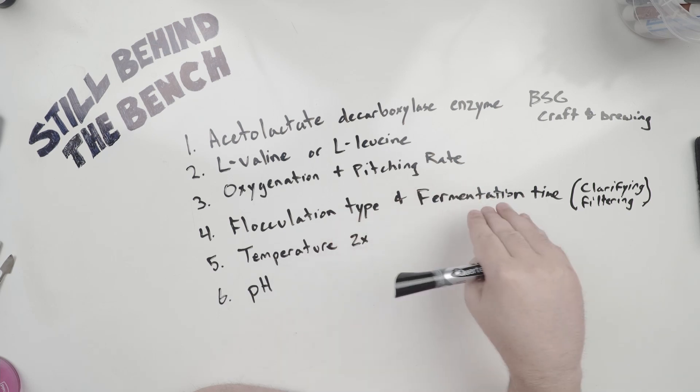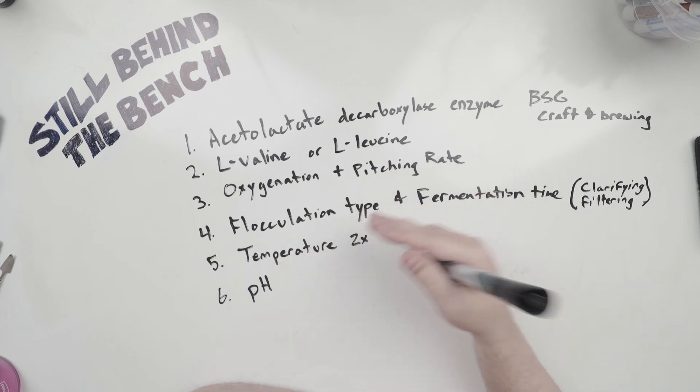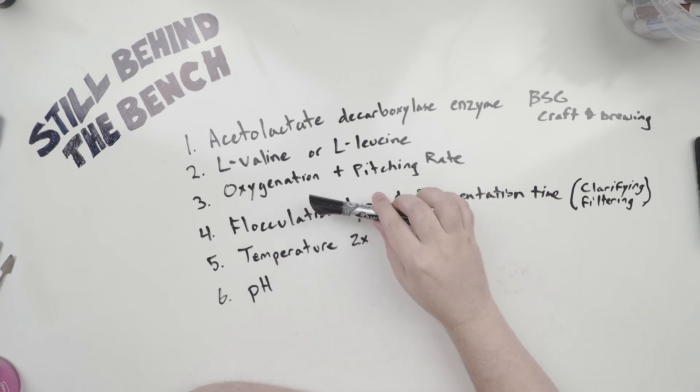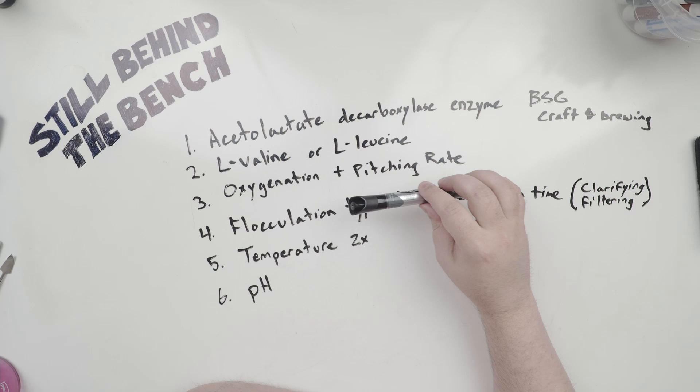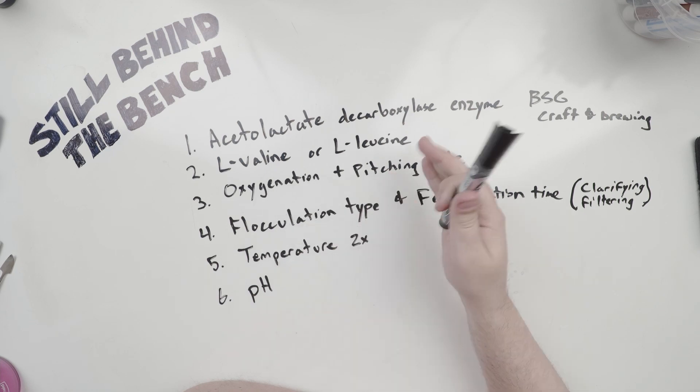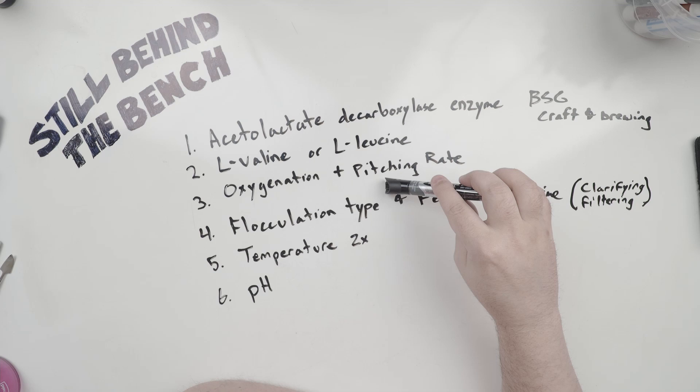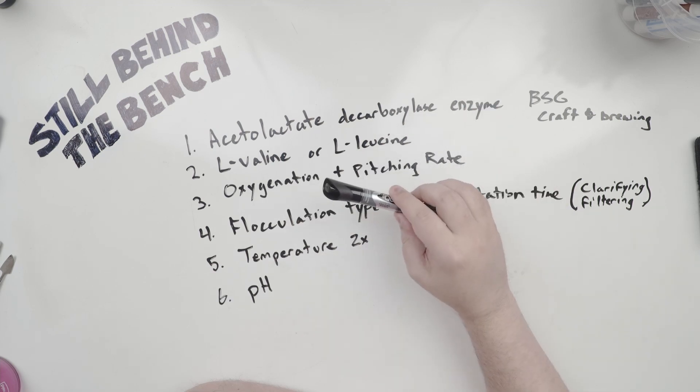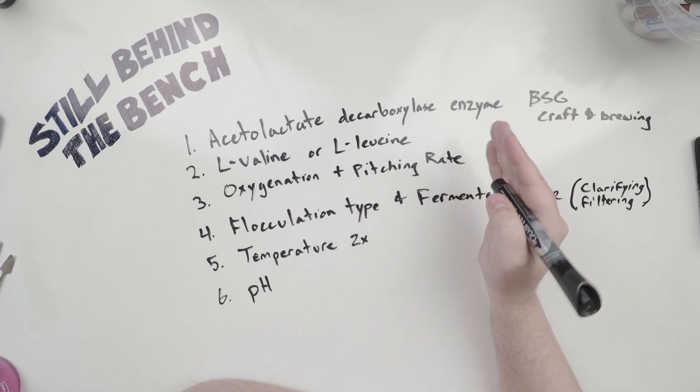Oxygenation and pitching rate, flocculation type and fermentation time, temperature and pH, and I'm going to go into detail in these. But these are all controls outside of specially bred or genetically modified yeast that are meant to be low producers of diacetyl in the first place. So I'm going to talk about oxygenation and pitching rate first. You may have heard that oxygenation plays a role in the creation of diacetyl, and it does, but it's not because it's doing any sort of oxidation reaction. If you have high oxygenation and you pitch a low quantity of yeast, you will have a lot of new cell growth, which will require the production of a lot of valine and leucine amino acids. That means a lot of alpha-acetolactate is going to be produced, and if more of it exists, then more of it can spontaneously turn into diacetyl.